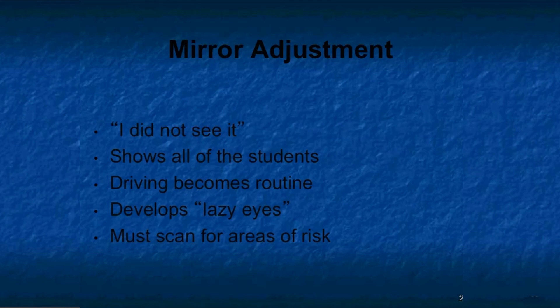Let's talk about mirror adjustment. The driver of a school bus that has been involved in an accident will most often say to the authorities that they just didn't see it. This is a truth because driving the bus on a daily basis has become routine. You must consciously scan the mirrors for areas of risk, and the improper adjustment of them can occur for at least two primary reasons: the manufacturers of the school bus use different designs for mounting the mirrors, and drivers should be aware of what they are looking for in their mirrors.